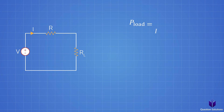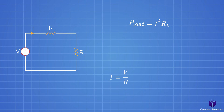We know power is equal to the current squared multiplied by the resistance. Since this is a series circuit, the current is the same for both resistors. We can use Ohm's law to figure out the current — current is equal to voltage divided by resistance. So here, it's V divided by our total resistance in this circuit, which is R plus RL.